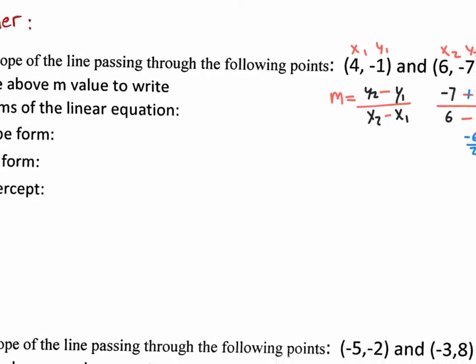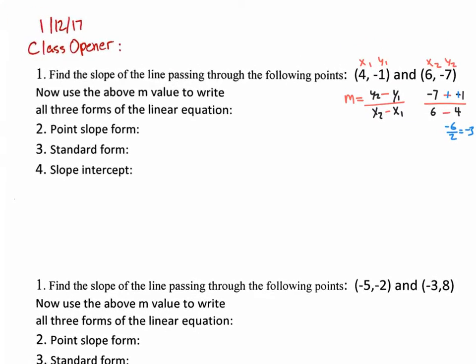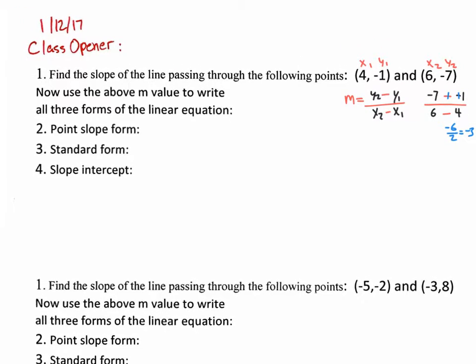So we get one point for that on tomorrow's test. Number one was to find the slope, so we say m equals negative three — that's your answer, you get a point for that. Now that we have a slope and some points, we can plug it into point slope form.